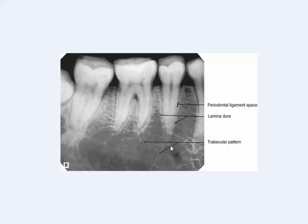In a periapical X-ray we can also see the trabecular pattern of the bone of the jaw. This is the trabecular pattern of the bone, and this is the interradicular bone between the roots of multirooted teeth.